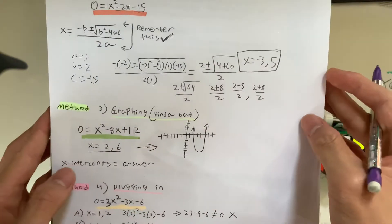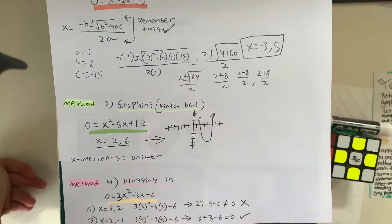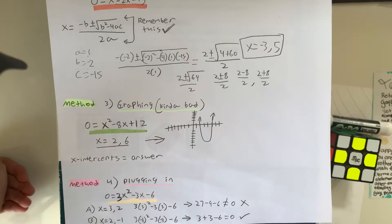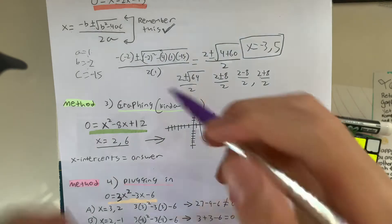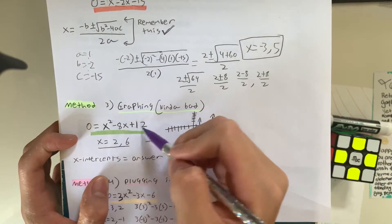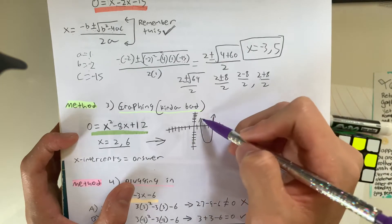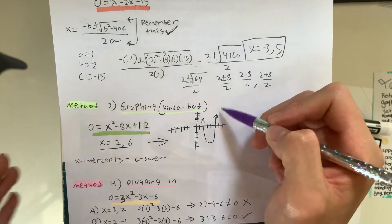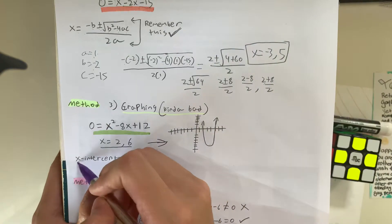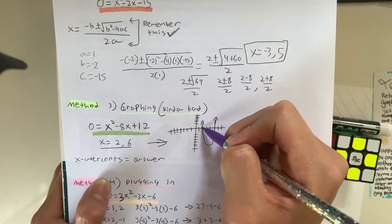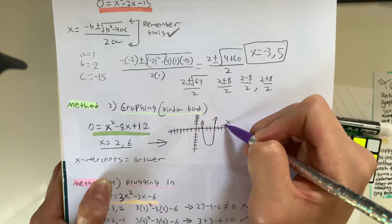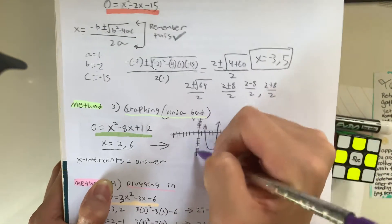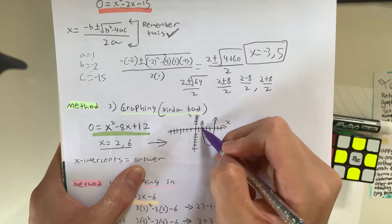The next method we have is called graphing, which requires you to have a graphing calculator, so this is not always going to be the best method. But in this case, if you plug in the equation x squared minus 8x plus 12 into your calculator, you're going to get a graph that resembles something along these lines. And your answer is going to be the x-intercept, which is basically the points where it hits the x-intercept. The x-intercept is this line right here, and the y-intercept is this line right here. So, your points are going to be 2 and 6, meaning those are your answers.